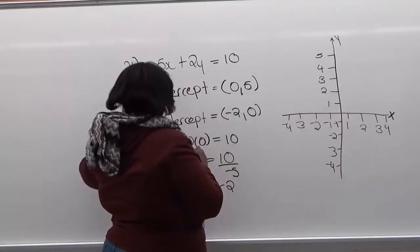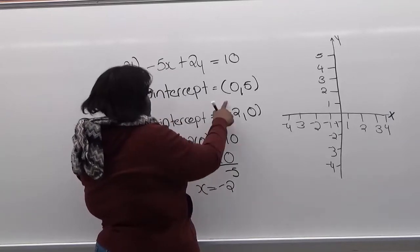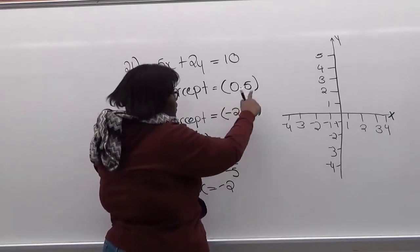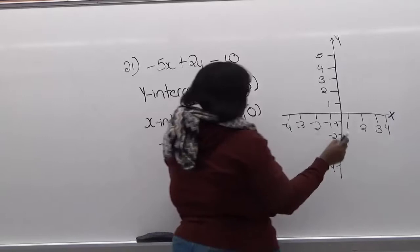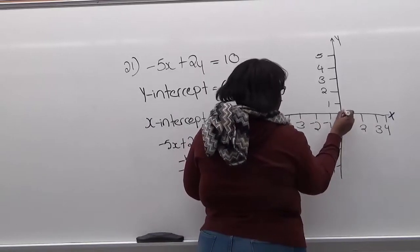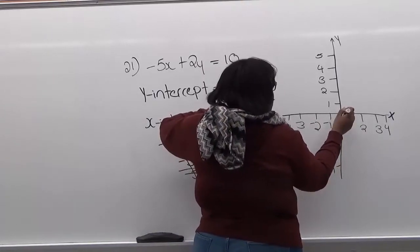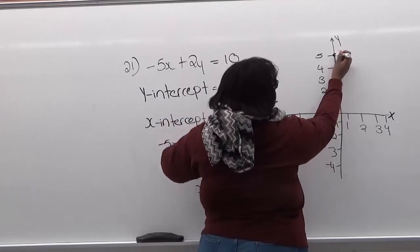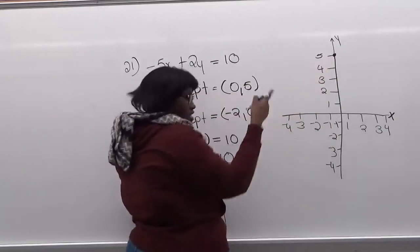So now we're going to graph our y-intercept points. So it's at (0, 5). So x is 0. So we're going to start here and then we're going to go up 5, which is here. So this is our y-intercept. As you see, it crosses the y-axis.